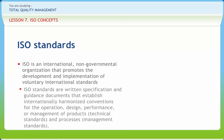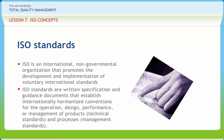ISO standards are written specifications and guidance documents that establish internationally harmonized conventions for the operation, design, performance, or management of products, technical standards, and processes management standards. Most ISO standards are technical standards. The ISO 9000 series and the ISO 14000 series are management standards.